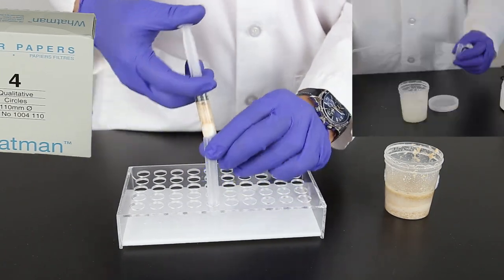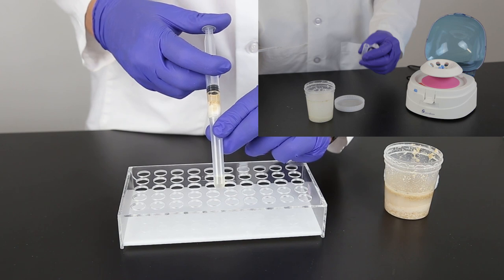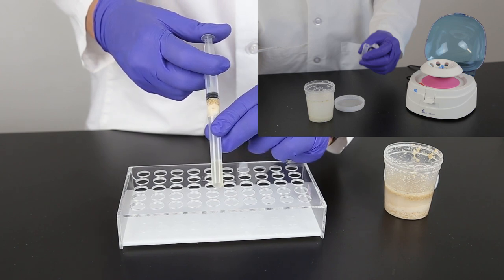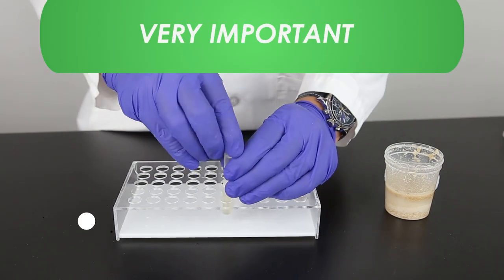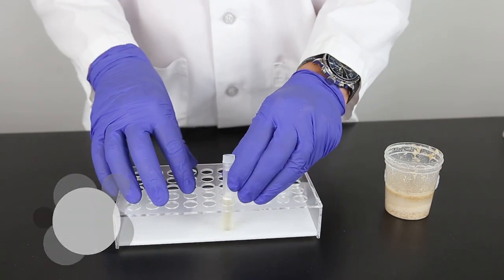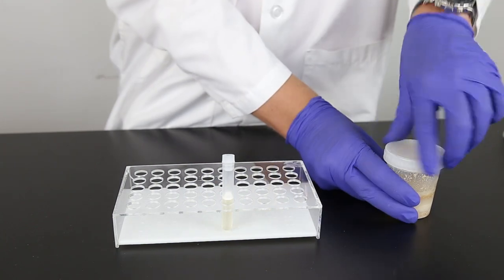You can also pipette the sample into a 2 milliliter microcentrifuge tube and centrifuge for 30 seconds. It is important to collect at least 3 milliliters of filtrate through a single filter syringe for optimal sample accuracy.